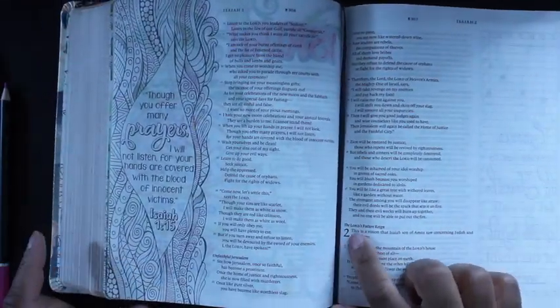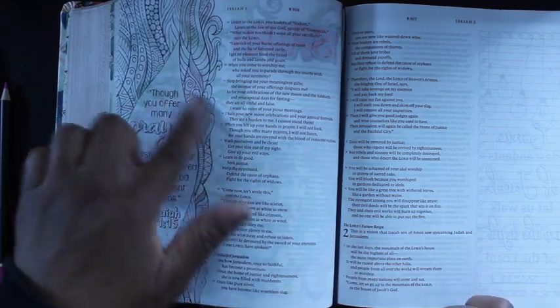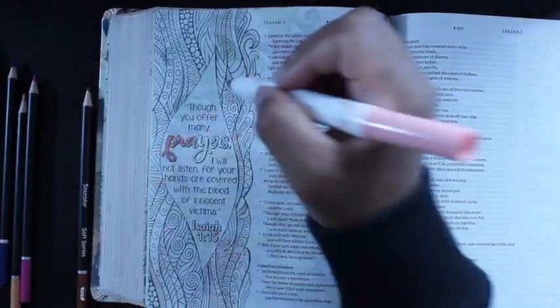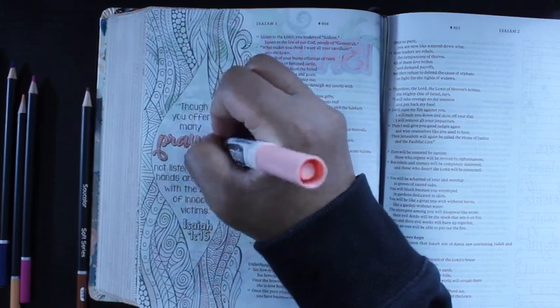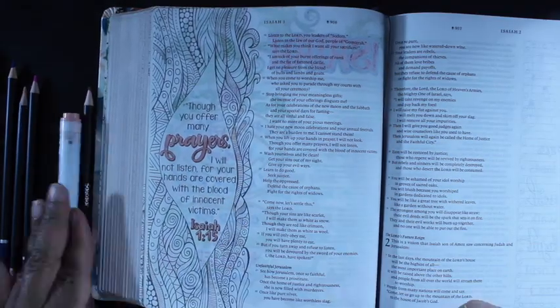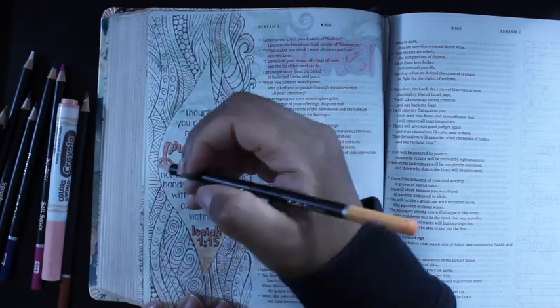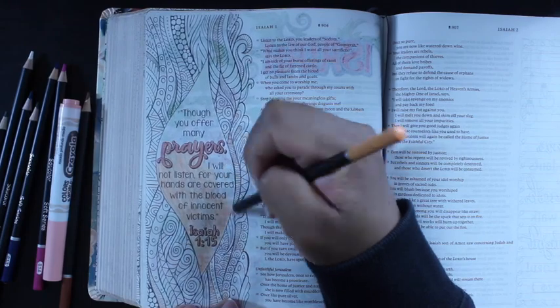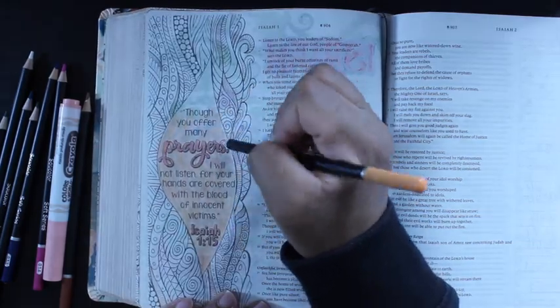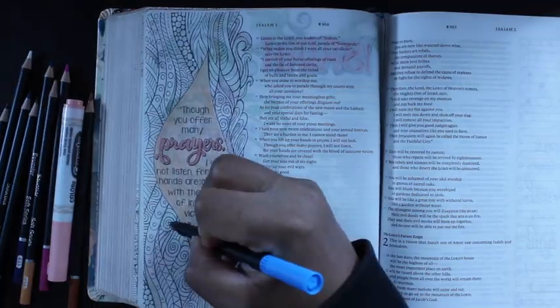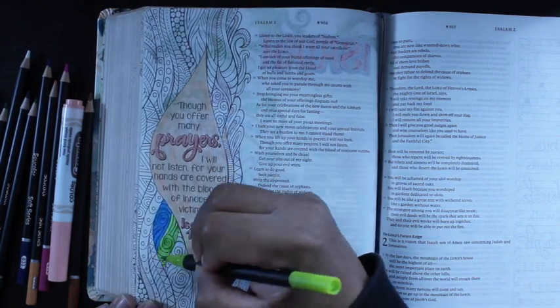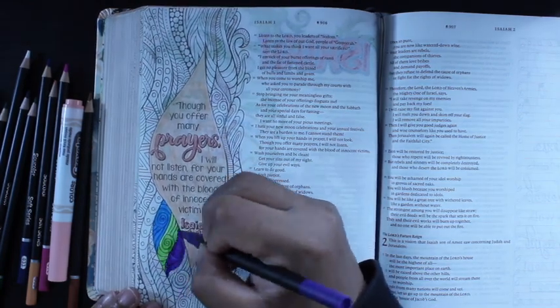Today we're going to be getting into chapter 2, in which the passage starts out by saying this is the Lord's future reign. So in chapter 2, this is a vision that Isaiah, son of Amoz, saw concerning Judah and Jerusalem. In the last days, the mountain of the Lord's house will be the highest of all, the most important place on earth.